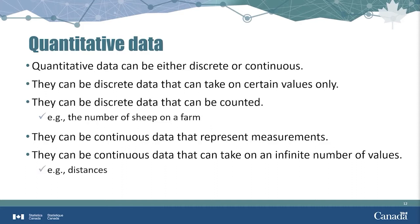Distance is an example of continuous data. It is continuous in that you could keep adding or removing small amounts and the distance would change. However, centimeters or kilometers are used to measure distance on a discrete scale.